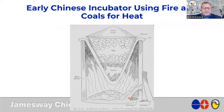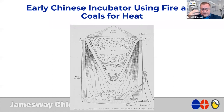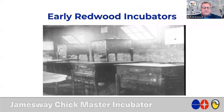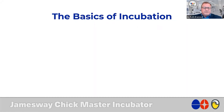A depiction of the Chinese incubator shows a charcoal fire with ashes and eggs sitting on top. One of the ways they sampled the temperature of the eggs was to put the egg on their own eyelid — a very sensitive part of the body — to feel if the egg was too warm or too cold. Even then they had an understanding of maintaining proper temperature throughout the mass of eggs. We then evolved into some of the older redwood-type incubators — a different style I've actually had a couple of in my time.